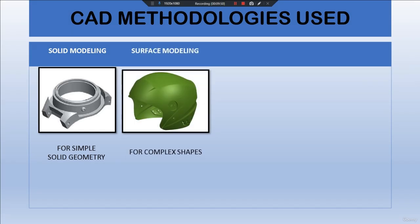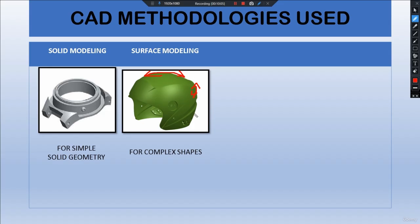The second methodology is surface modeling. This method is used for generally complex shapes because one cannot easily measure arcs or curved features of an object using conventional tools. Instead, we take the help of scan data and start performing surfacing operations on it.